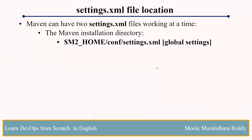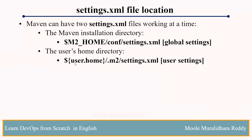We can also declare one more location, that is user level. If you want to declare user level, for example if you are in the root user, inside the root user we have a .m2 directory — user home directory, /root/.m2. Inside the .m2, we can declare the settings.xml also. So inside whatever user you log in, the particular user home directory dot m2 directory is created, and we can declare that settings.xml there. That is called user settings.